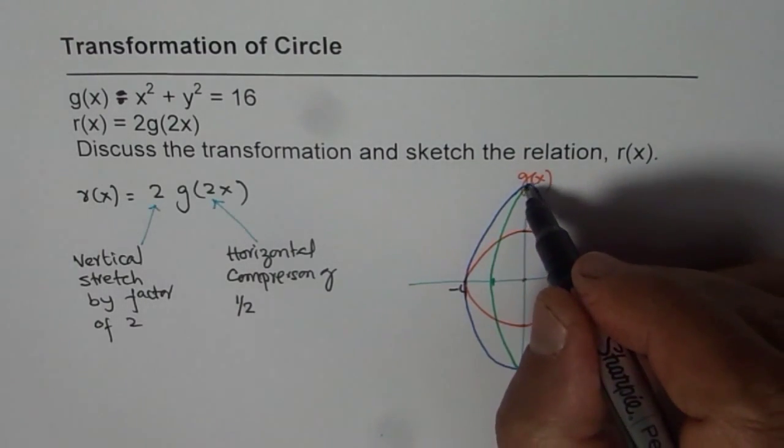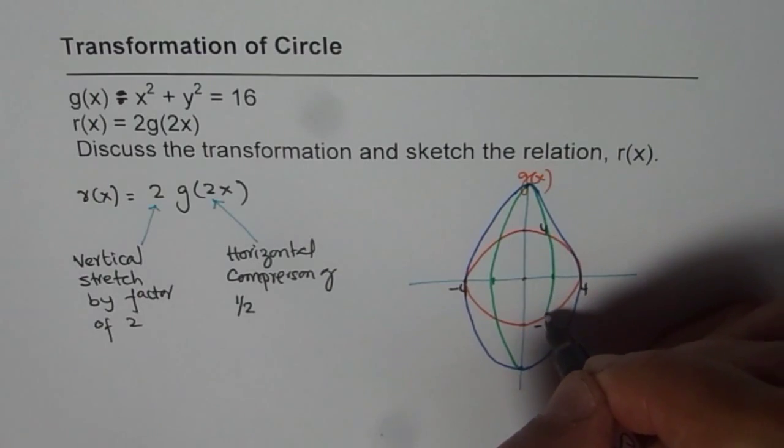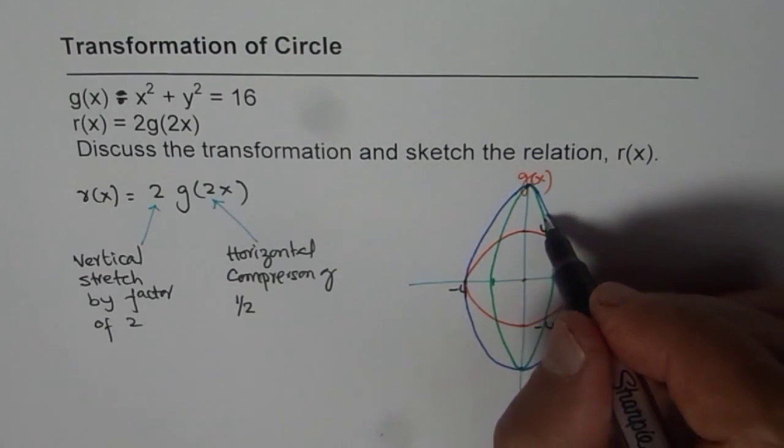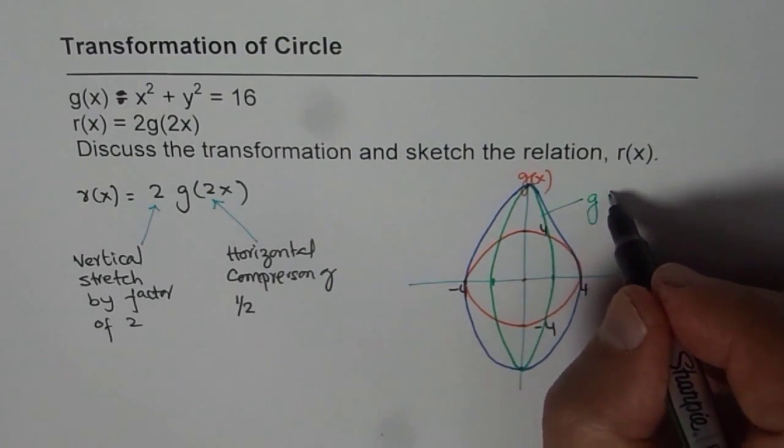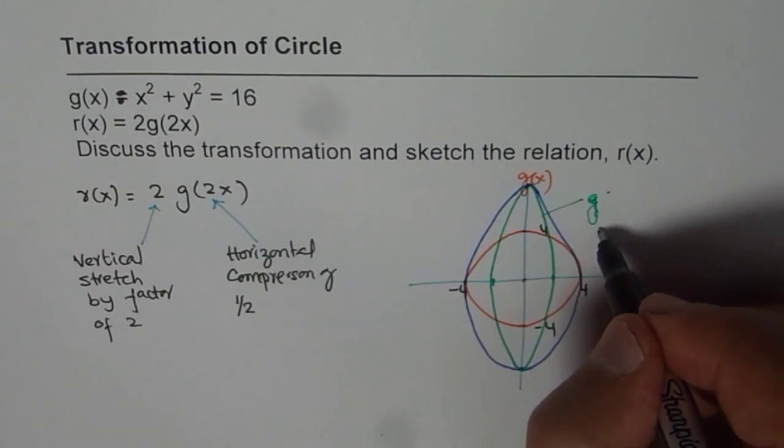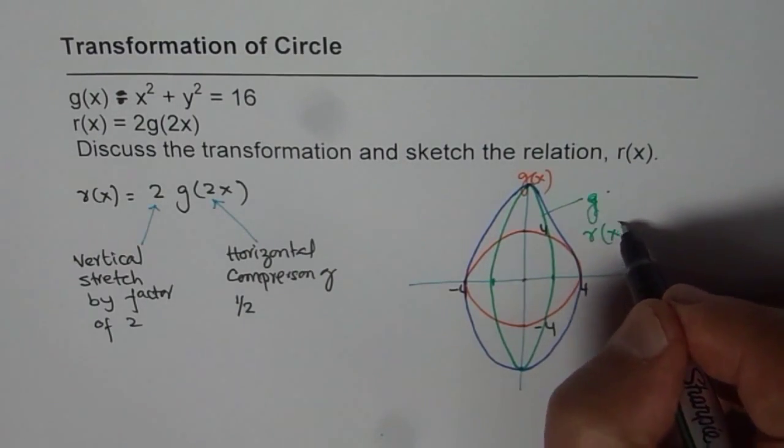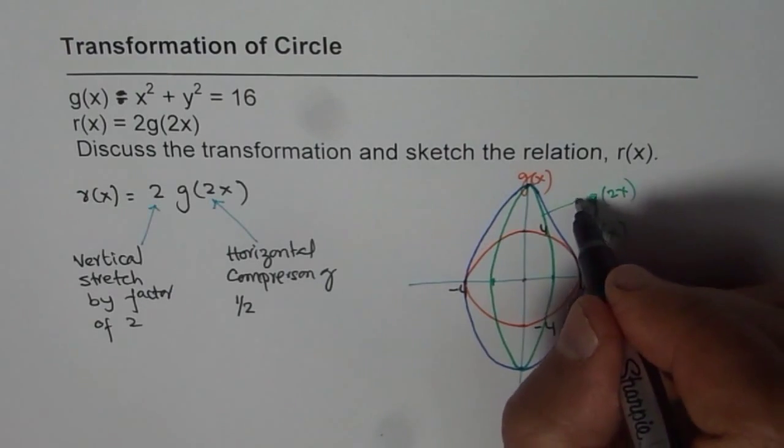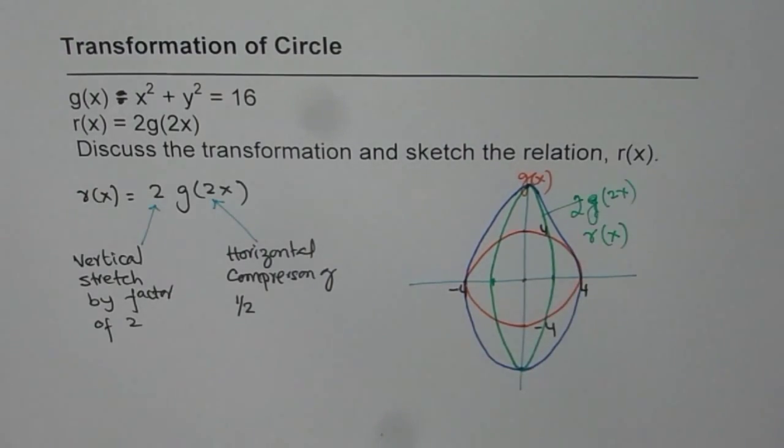So that will give you the graph as kind of like this. Now, you can join these points to the smooth curve and that is what you get. So this function which you get now is r of x. It is r of x, 2 times g of 2x.